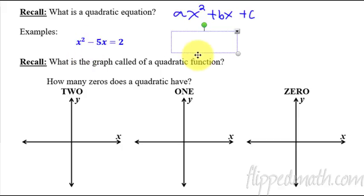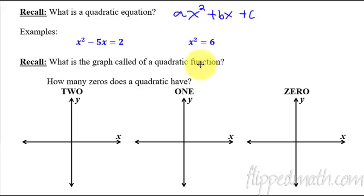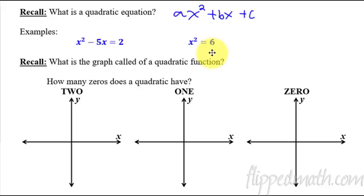This is a quadratic equation because the largest exponent is a 2 of the variables. So, it's quadratic. Another example: x squared equals 6. This is a quadratic equation because, again, the largest exponent of a variable is a 2. Notice we don't have any bx here. You just have the quadratic term and the constant — no problem, it's still a quadratic equation. In fact, they're even easier to solve. This is what we're going to focus on today — solving ones like that.